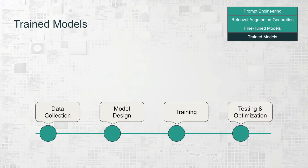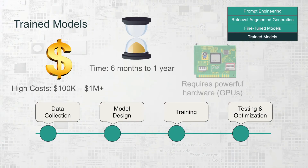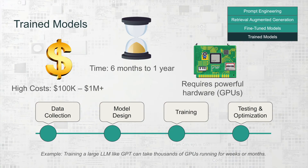And finally, the most demanding approach is building a trained model from scratch. This method is ideal if you have a large amount of specialized data and need a model built specifically for your field. By creating your own model, you can achieve the highest quality results, perfectly tailored to your exact needs. However, this approach is both time-consuming and very expensive. Developing a trained model from scratch can take several months to over a year, depending on complexity. The cost can be significant — often hundreds of thousands to millions of dollars — due to the need for high-end hardware, expert engineers, and data scientists. Training large models like OpenAI's GPT can require thousands of GPUs running in parallel for weeks or even months.